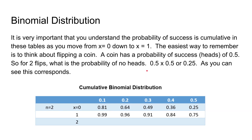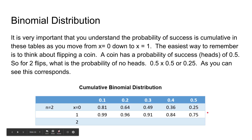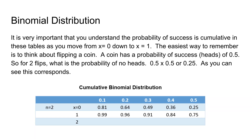It's very important to understand how to use this table and that it is a cumulative table. For the coin flip example with p equals 0.5: the probability of zero successes is 0.5 times 0.5, which is 0.25. The probability of exactly one heads and one tails is 0.25 plus 0.25 equals 0.50, because heads-tails and tails-heads are both valid. Finally, the probability of two successes is also 0.5 times 0.5 equals 0.25, and all these values add up to 1.